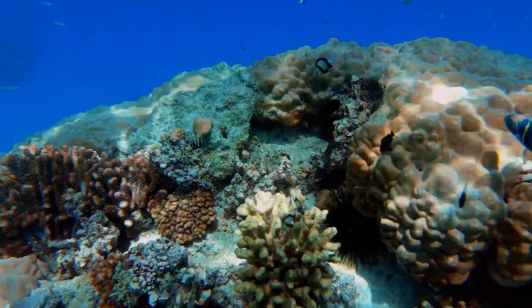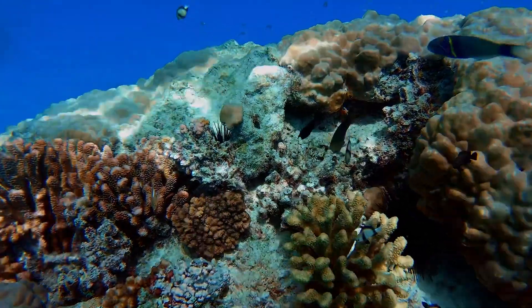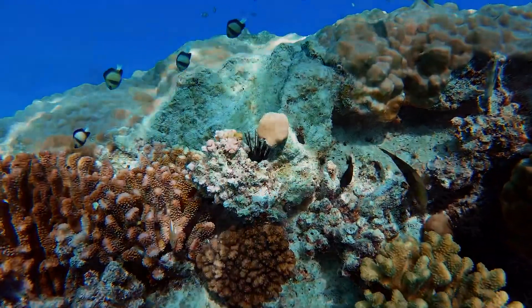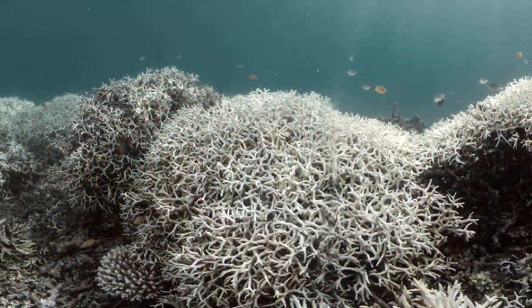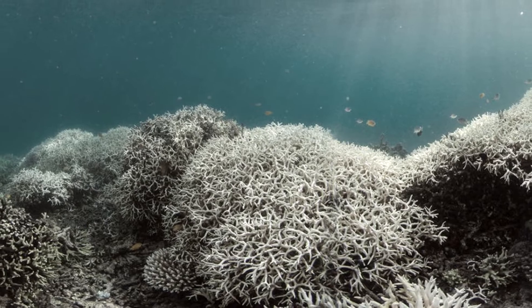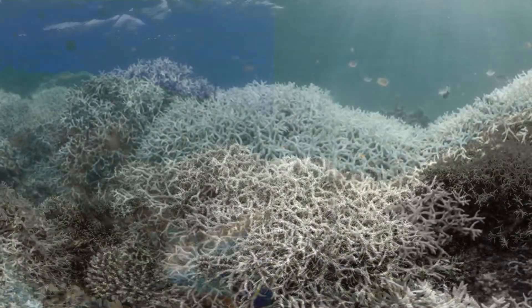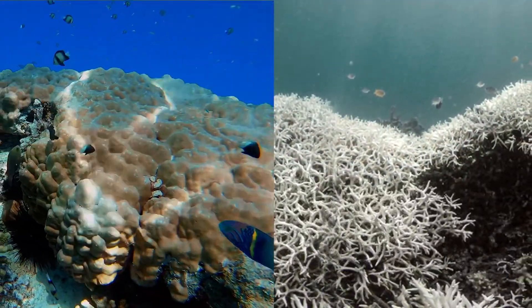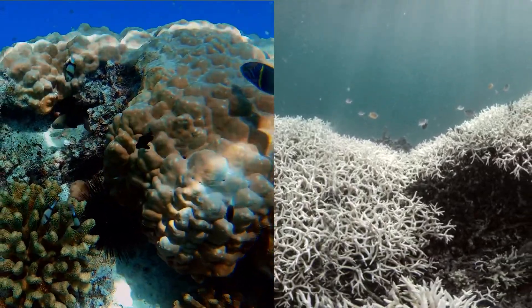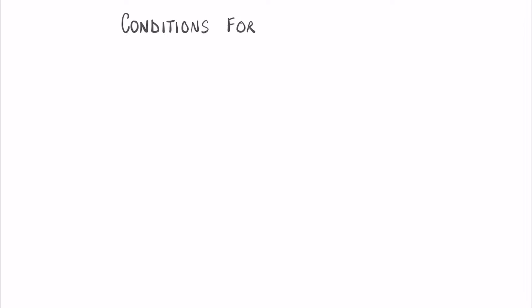You may have seen beautiful coral reefs flourishing with plants and animals, and you may have also seen reefs which are devastated, destroyed, diseased and unhealthy. What makes the difference between these two sets of reefs? That is what we're going to look at today in this lesson. We're going to look at the conditions necessary for optimum coral reef growth.